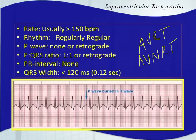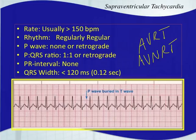The P wave for SVT will either be non-existent or retrograde — sometimes buried within the QRS complex or the T wave. Because this is such a fast rhythm and the depolarization wave occurs in almost a retrograde fashion, you probably won't see a P wave at all. If you did see one, you'd only have one per QRS complex. The QRS width should be narrow, less than 120 milliseconds. We haven't talked about wide rhythms yet, but we'll get to those soon.